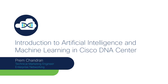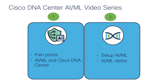Today in this video I will cover the benefits of artificial intelligence and machine learning with Cisco DNA Center. This will be a two-part video series. In the first video, I will cover the pain points of network troubleshooting without AI and ML, then talk about the benefits of using the AI ML features in Cisco DNA Center.